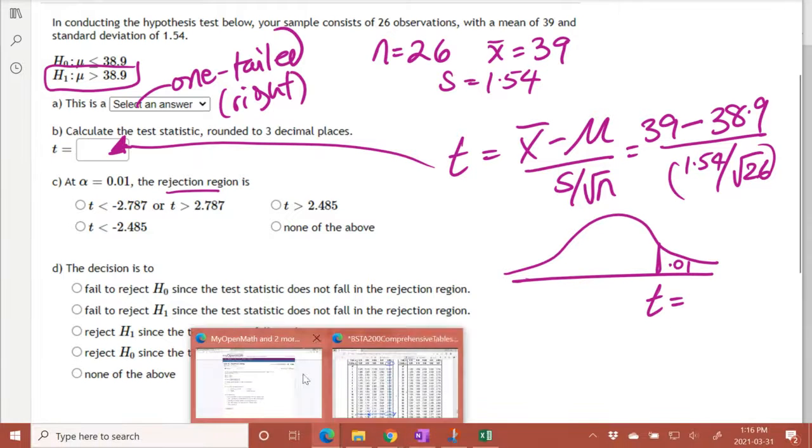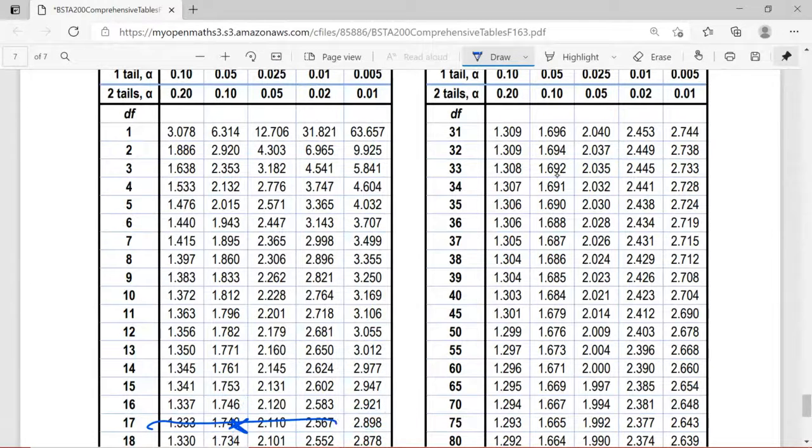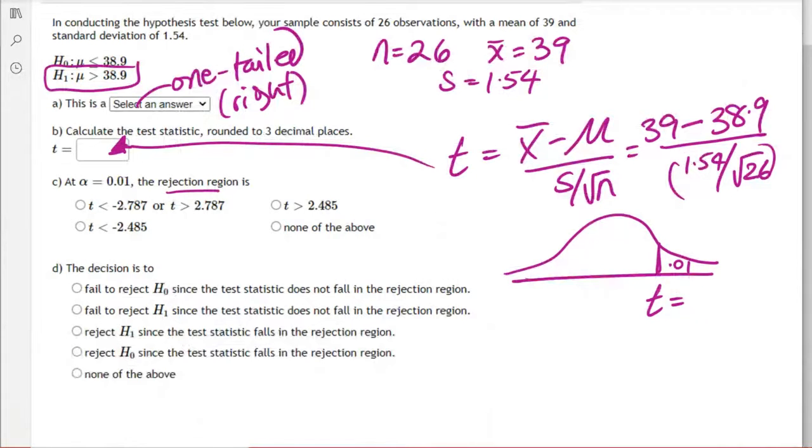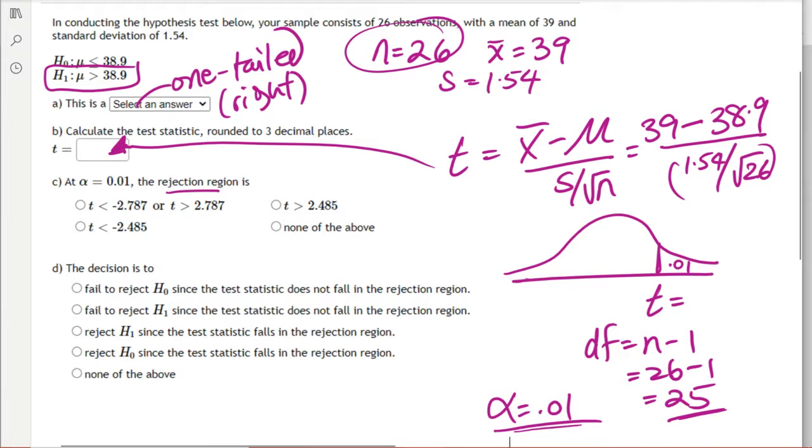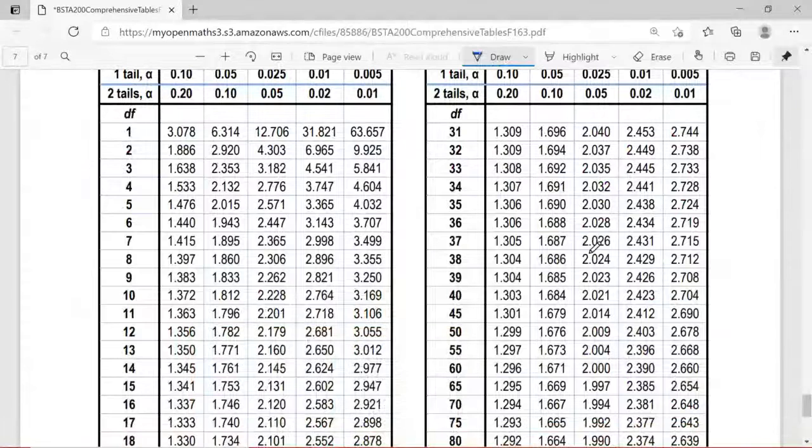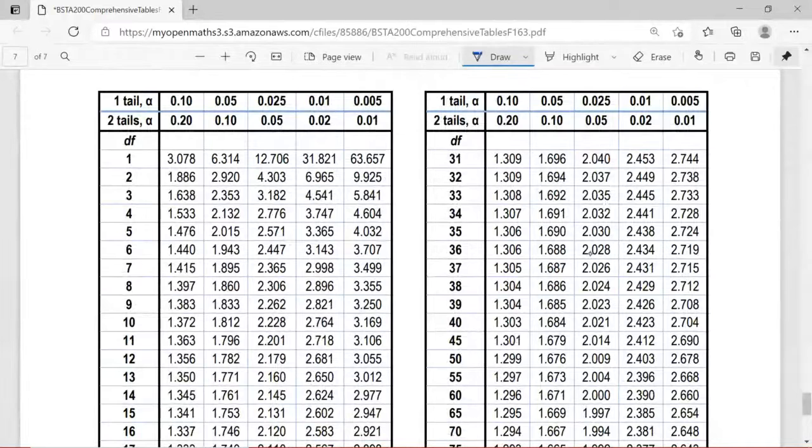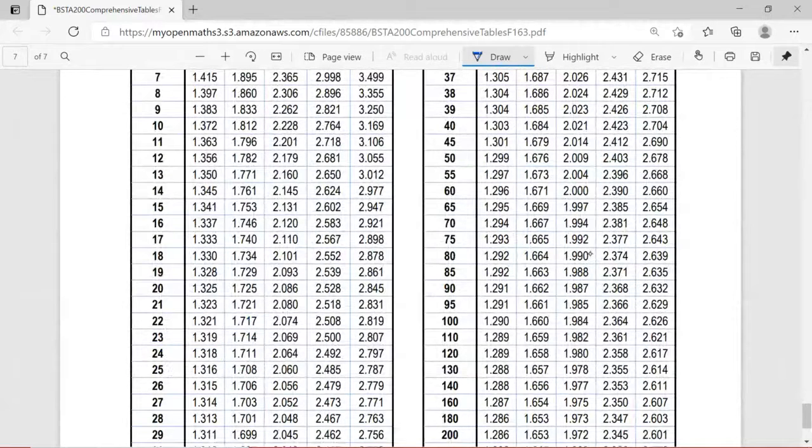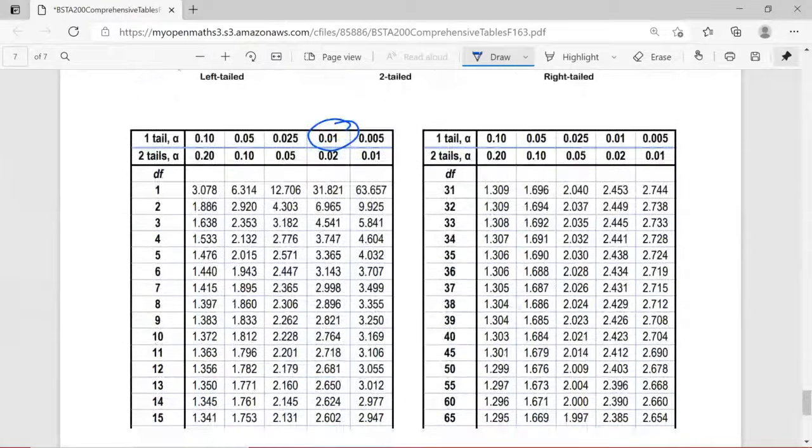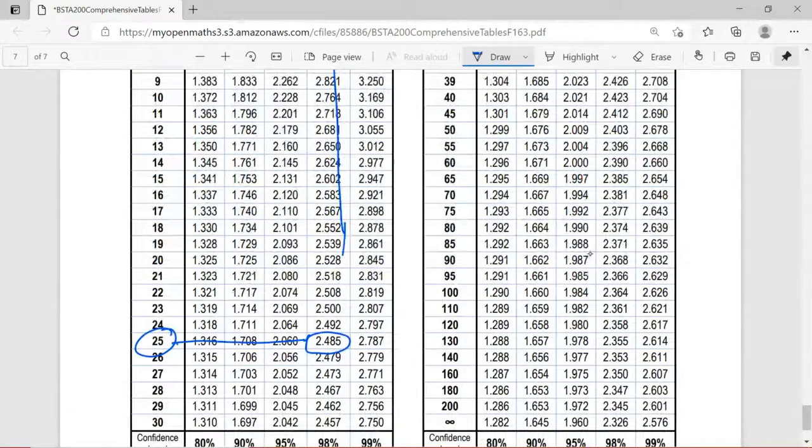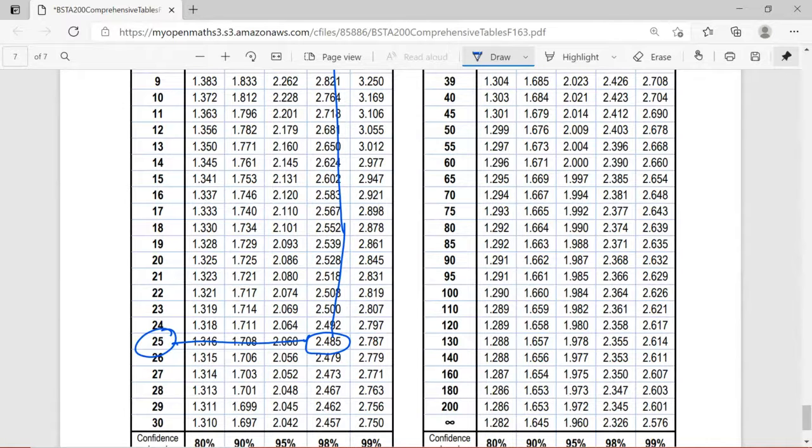We go to the T table and look up degrees of freedom. N for this question is 26, so the degrees of freedom is N minus 1, which is 26 minus 1, which is 25. We have an alpha of 0.01 and degrees of freedom of 25. Now, again, it's a one-tailed test with alpha of 0.01, and we find our degrees of freedom of 25, which is right there. So 0.01, one-tailed, and degrees of freedom of 25 corresponds to a critical value of 2.485.